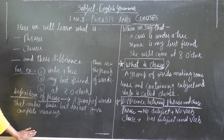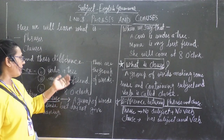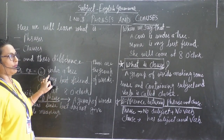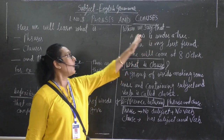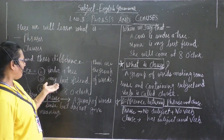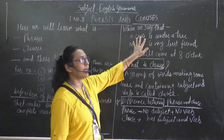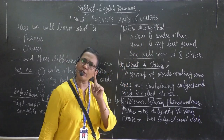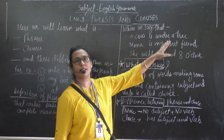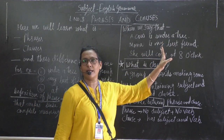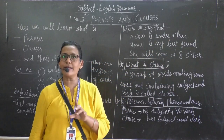So, the definition of a phrase is: a group of words that makes some sense but does not give a complete meaning. Now, when we say 'a cow is under the tree' or 'Mona is my best friend,' you are getting complete meaning. Can you see the complete meaning? Yes — you are getting good sense. That means it is a full sentence — you are getting full meaning, complete sense.